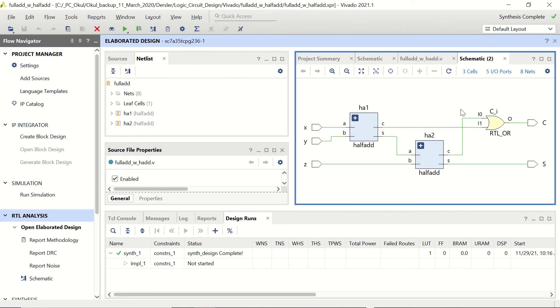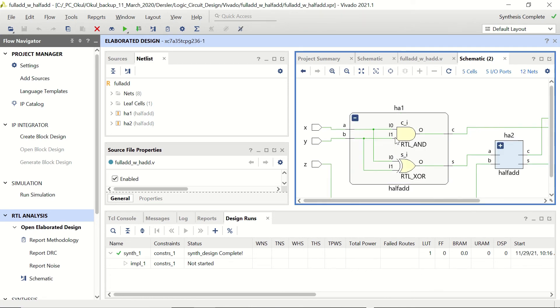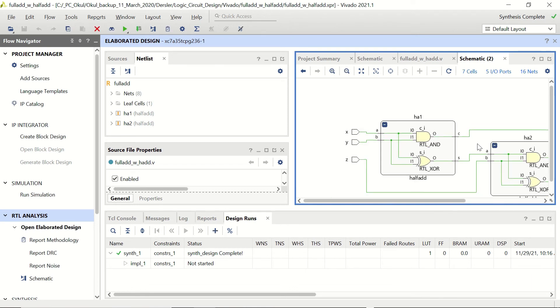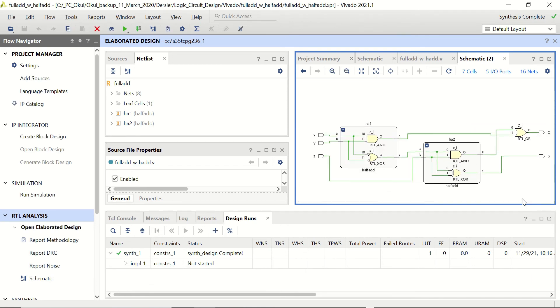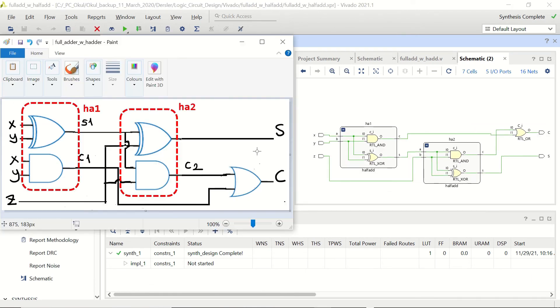And here you can see our full-adder module. If we click on these plus signs in the HA1 and HA2 we can see the details of them. And here we can cross-check with our initial design.